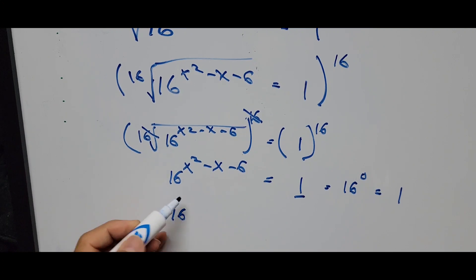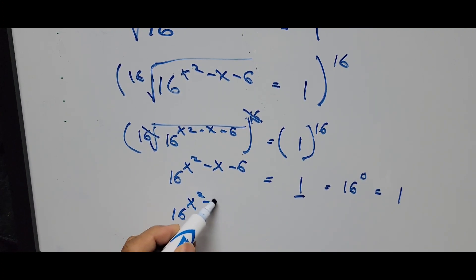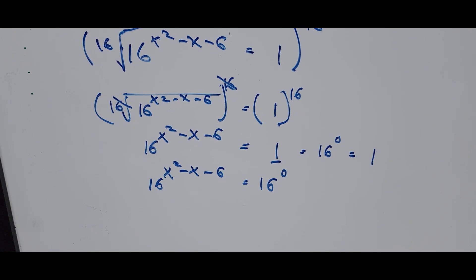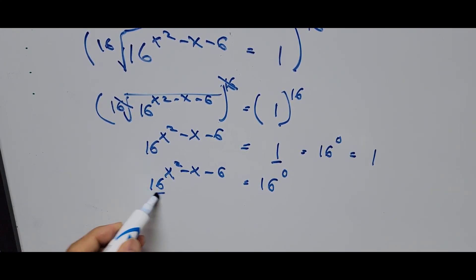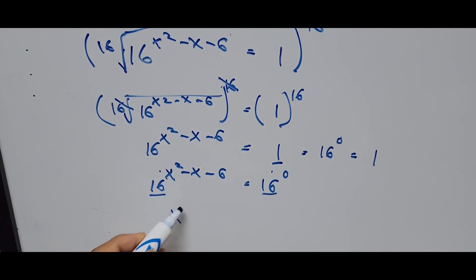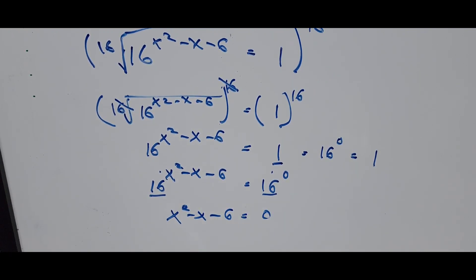The equation now becomes 16 to the power x squared minus x minus 6, equal to 16 raised to the power 0. Since the left and right sides have the same base, we can equate the exponents. The equation now turns out to be x squared minus x minus 6 equals 0, which is a quadratic equation.